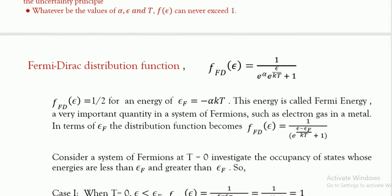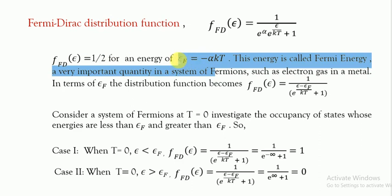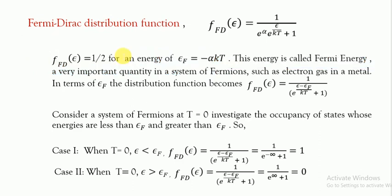Now the Fermi-Dirac distribution function: f(E) = 1 / [e^(α + E/kT) + 1]. The Fermi-Dirac function equals one-half for an energy E_F = −α kT. When the probability of the Fermi-Dirac function is one-half for an energy E_F, this energy E_F is called the Fermi energy, and it is a very important quantity in systems of fermions such as an electron gas in a metal.